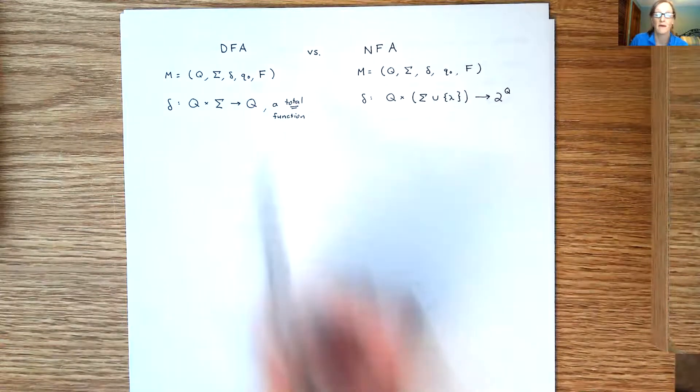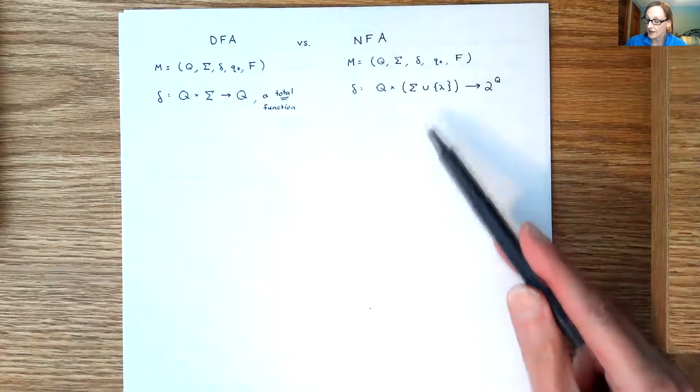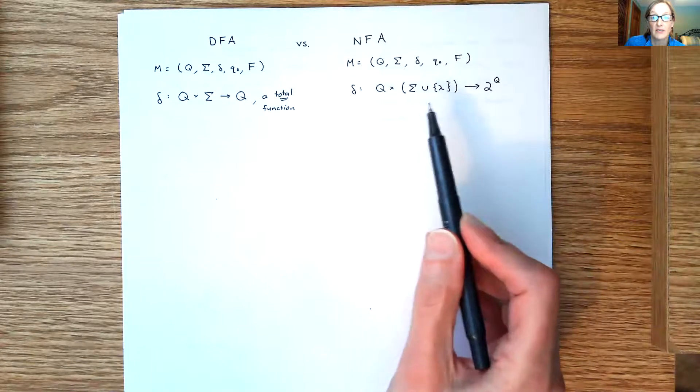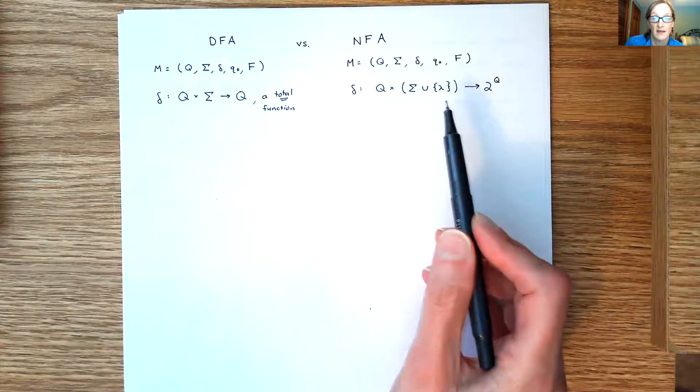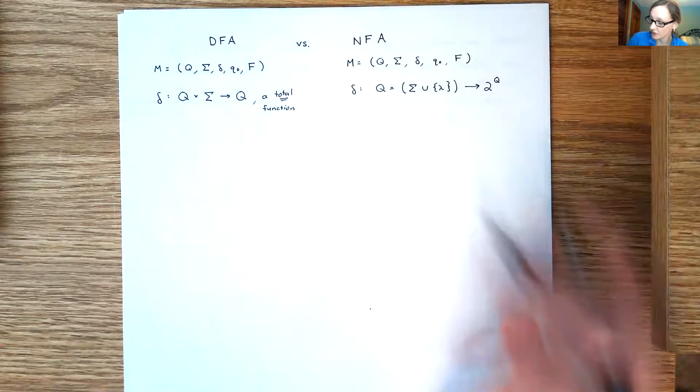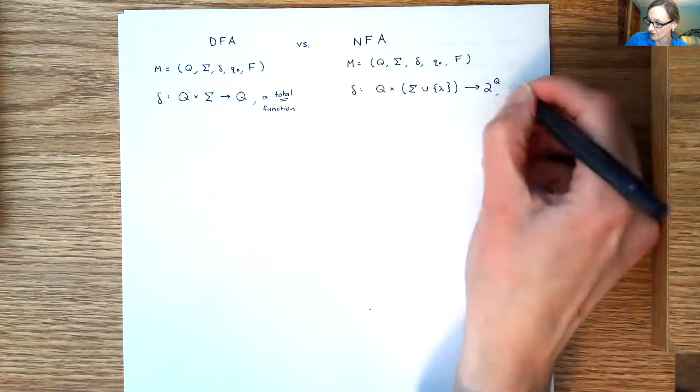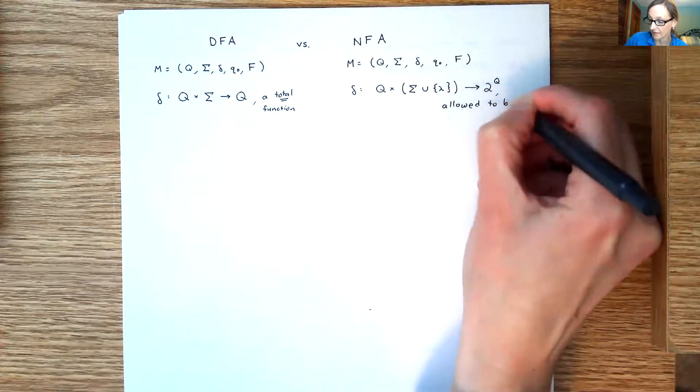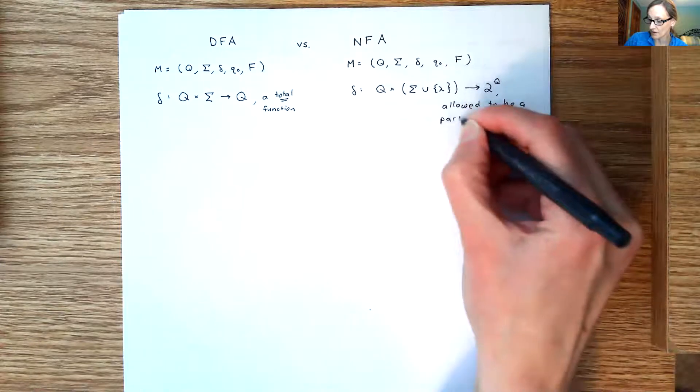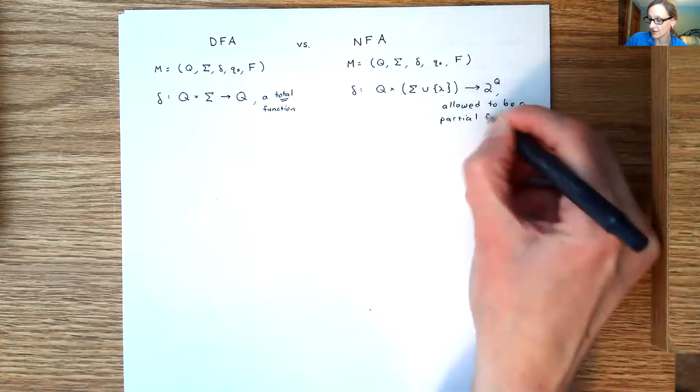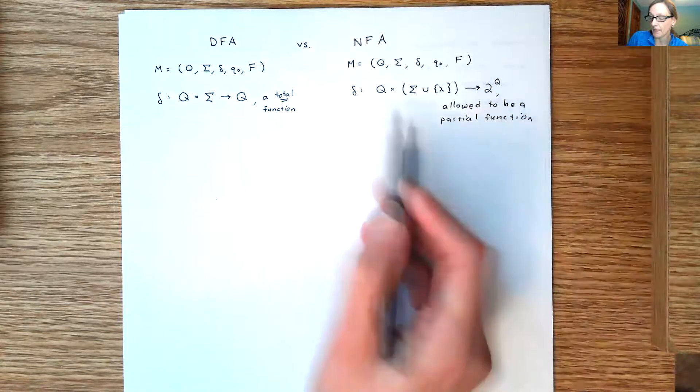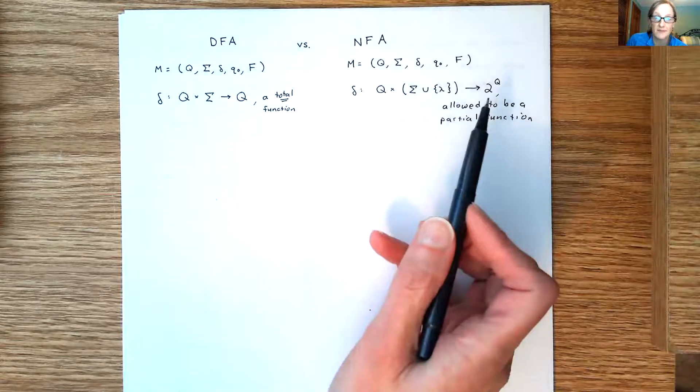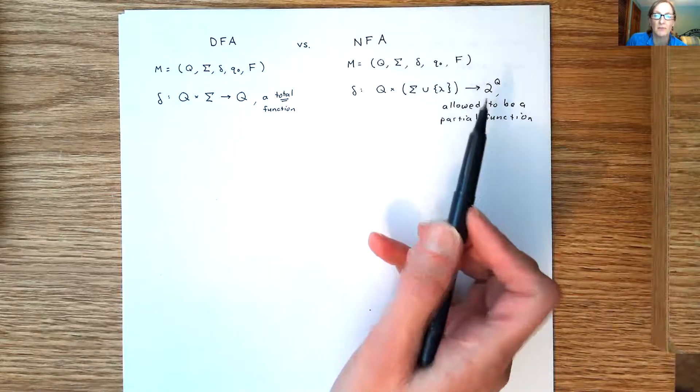Then if you look at the NFA, for the NFA the domain is Q cross Sigma union lambda, and then the range is the power set of Q. And this one it's allowed to be a partial function. It could be a partial function, technically you can think of it as a total function even if there are situations where one of the elements is not mapped anywhere, you can think of it as being mapped to the empty set.